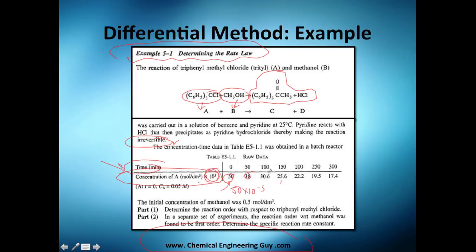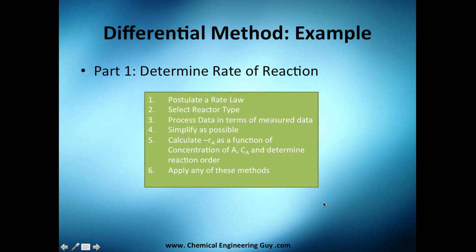So you have very nice numbers - 58, 38, 3.6, etc. Actually the initial concentration they tell is 0.05 molar, which means 50 if you have the 10 to the minus three here. So if you got the initial concentration of that, Part 1: determine the reaction order with respect to triphenyl methyl chloride, which is just get alpha.